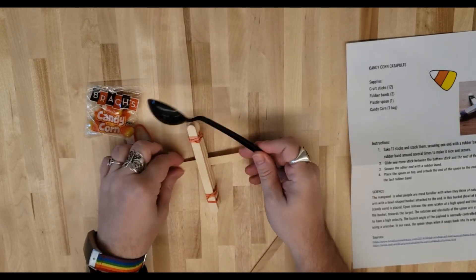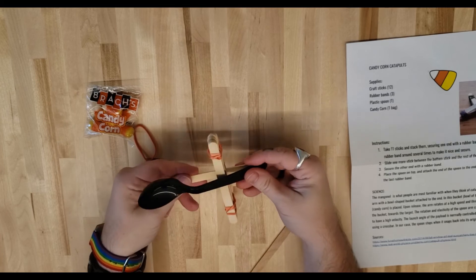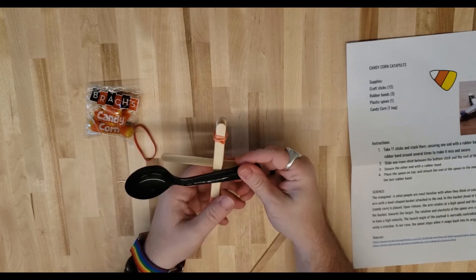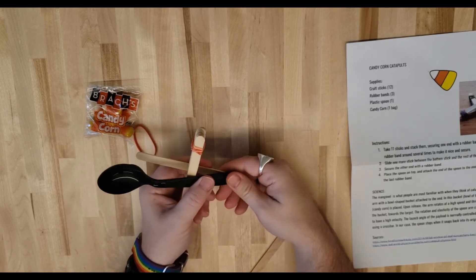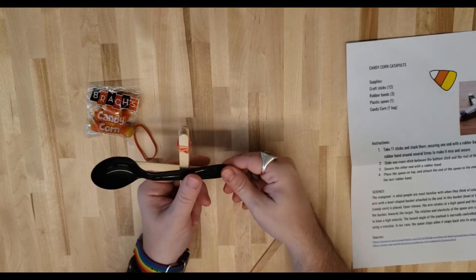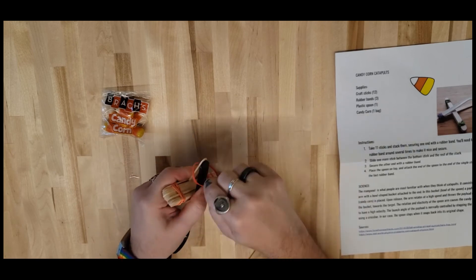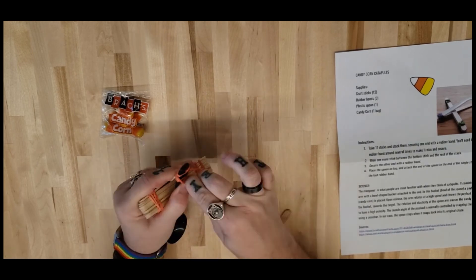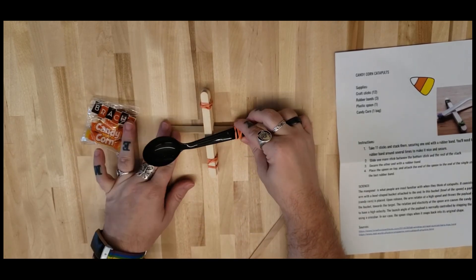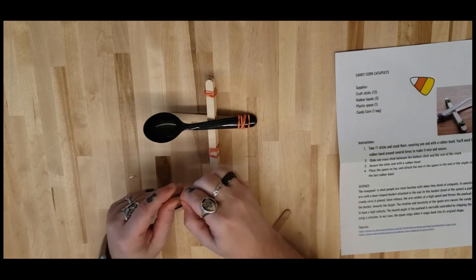So now on the shorter end of the stick you put through, it's where you're going to put your spoon. Time to break out that candy corn.